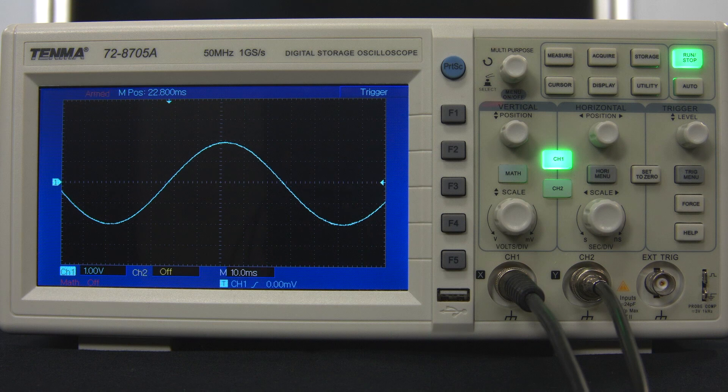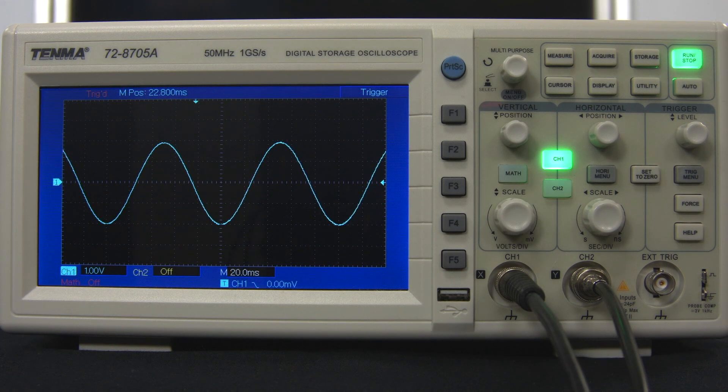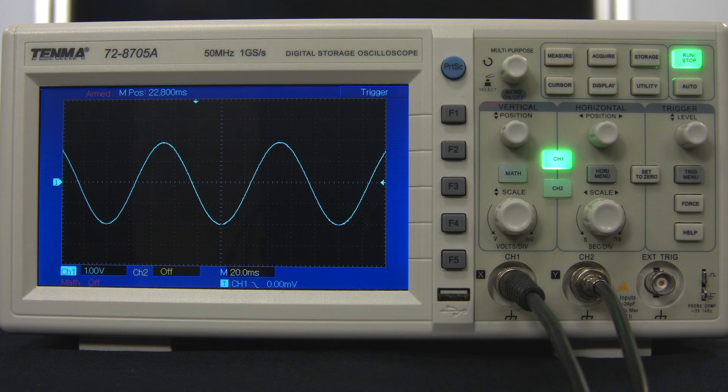Once again, there is no change to the signal into the oscilloscope. It remains a 10 hertz frequency in this case. Only the display is being varied. As well as the adjustment knobs, there are also buttons that typically bring up menus on the screen. So let's look at some of them now.